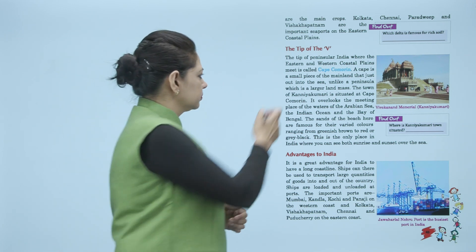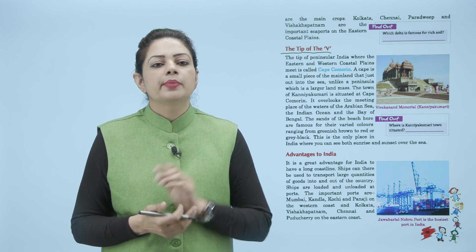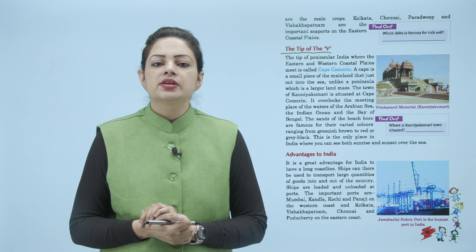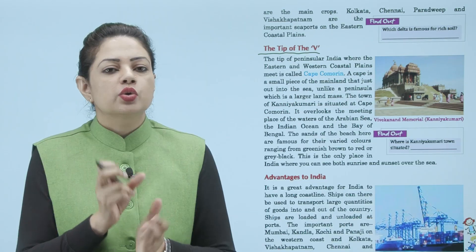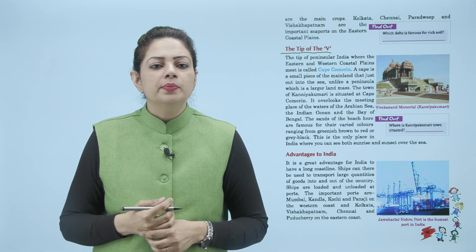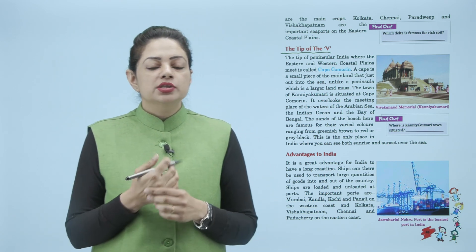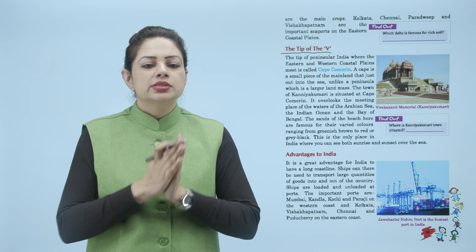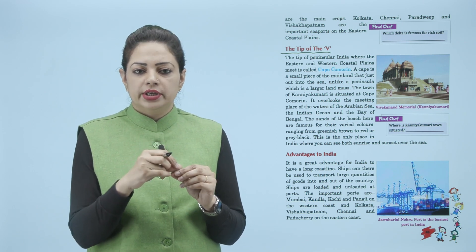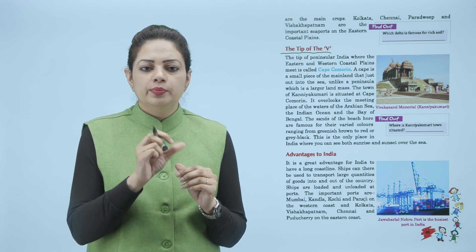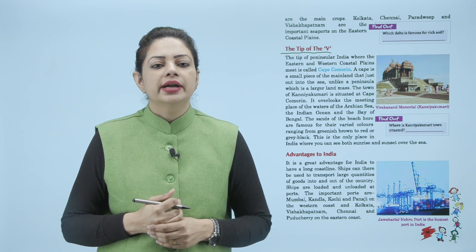The tip of the V — jahaan end hote hain ye dono coastal plains — the tip of peninsular India where the eastern and western coastal plains meet is called Cape Comorin. A cape is a small piece of the mainland that juts out into the sea, unlike a peninsula which is a larger landmass. Cape Comorin is the last point jahaan western aur eastern coastal plain aapas mein milte hain. The town of Kanyakumari is situated at Cape Comorin.